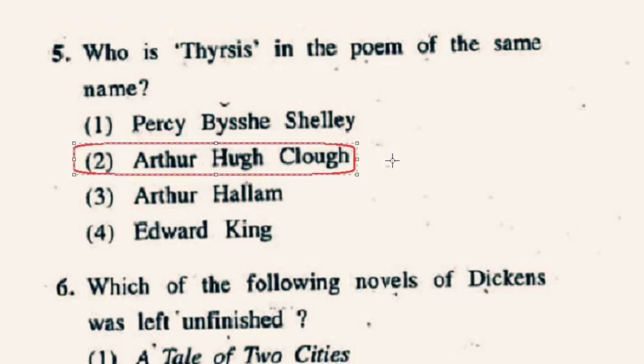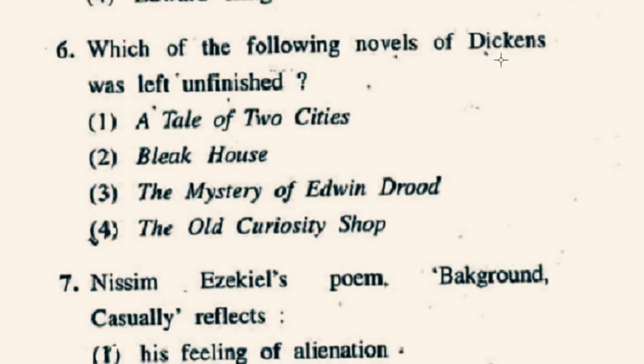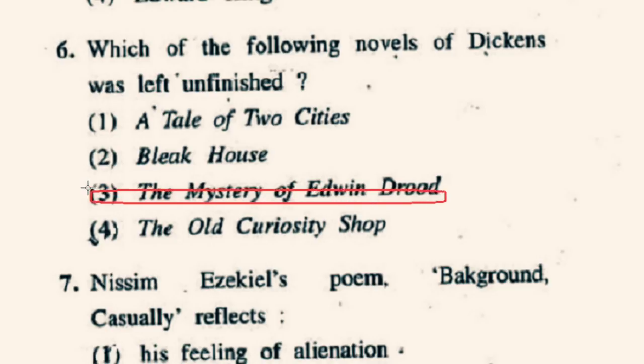Question number 6: Which of the following novels of Dickens was left unfinished? Charles Dickens' novel The Mystery of Edwin Drood is his final novel. This novel was unfinished at the time of Dickens' death on 9th June 1870. So the right option will be 3rd option, The Mystery of Edwin Drood.